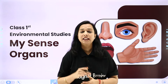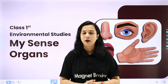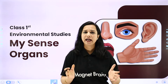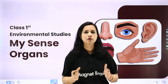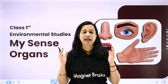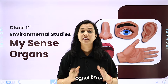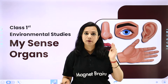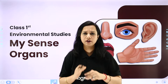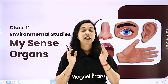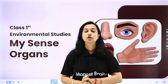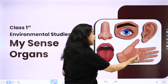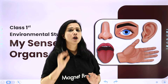So children, in the last chapter we learnt about different types of body parts — like hands, nose, eyes, hair, thighs, stomach, everything. So from top to bottom we learnt about different types of body parts. But ab aapke is chapter mein we are going to learn about your 5 types of sense organs.